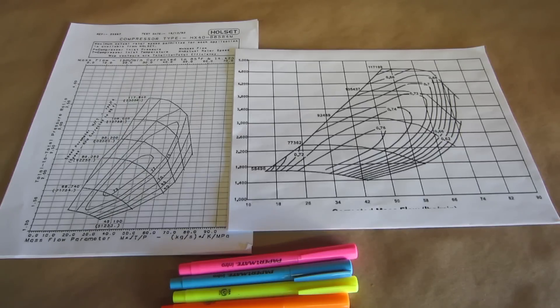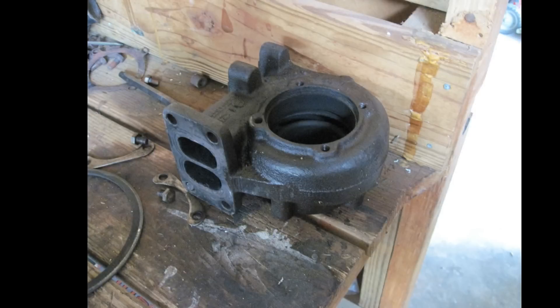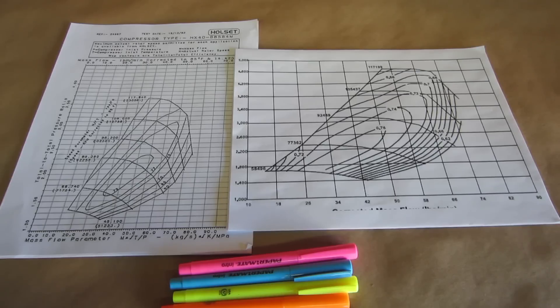Today is all about choosing the right turbo for your car. Many things go into this decision like desired spool, ball bearing or journal bearing, T3, T4, or DSM flange turbine housings, and most of all the amount of power that you plan to make.